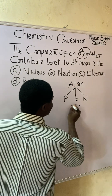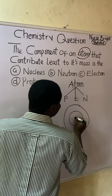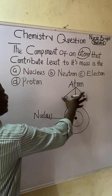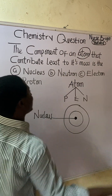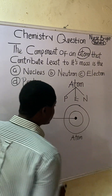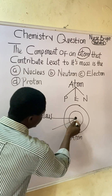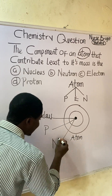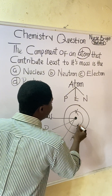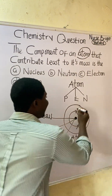Listen carefully. Diagrammatically, this is how an atom is drawn. At the center, we have what we call the nucleus. These subatomic particles are found inside an atom. Specifically, inside the nucleus we have two: protons and neutrons. And one of them revolves around the nucleus — that is called electrons.